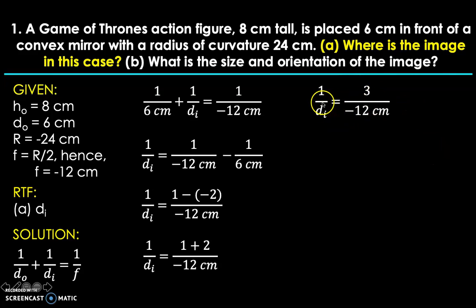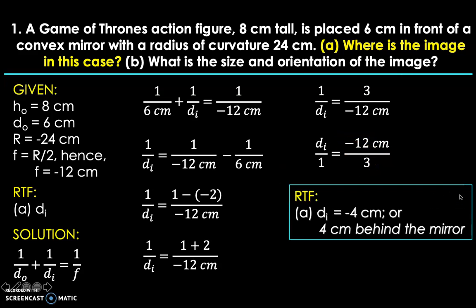To make d_i a numerator, since that's the required to find, you have to flip the equation vertically. Negative 12 divided by 3 is going to be negative 4. So d_i or image distance is negative 4 centimeters, or 4 centimeters behind the mirror. You would know it's behind the mirror because based on our sign conventions, if d_i is negative, it means that the image is located behind the mirror. So it's a virtual image in that case, because if it's in front of the mirror, that's a real image.